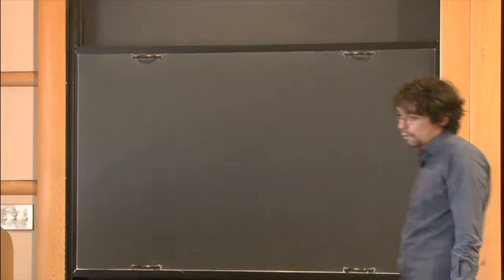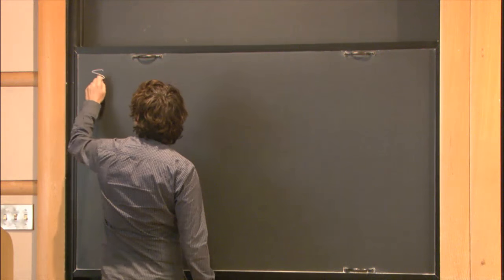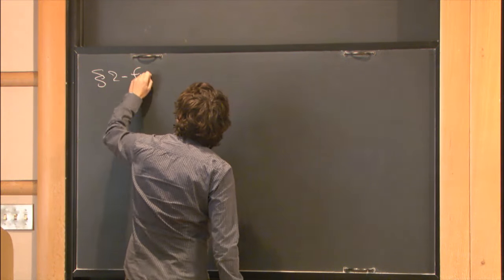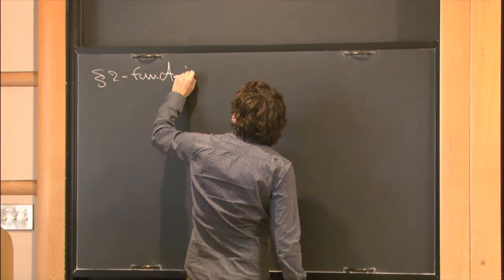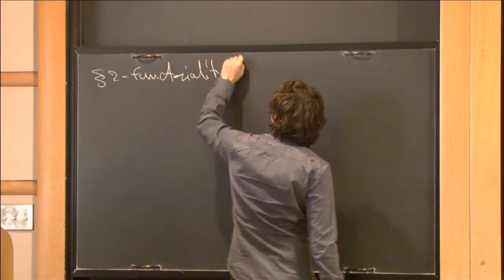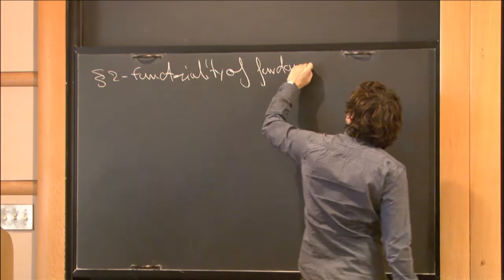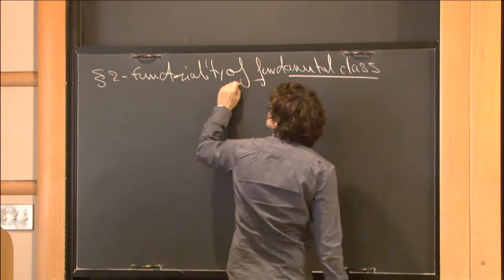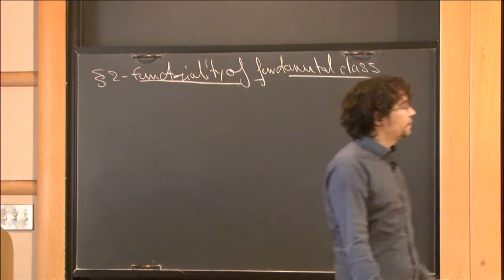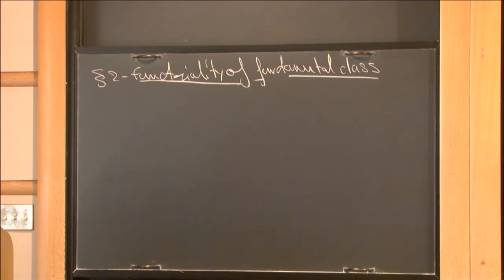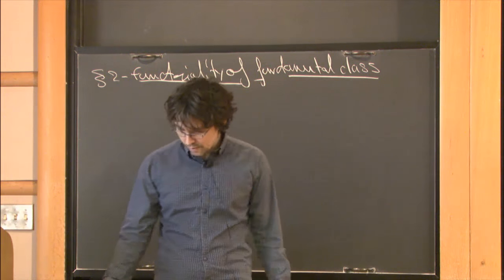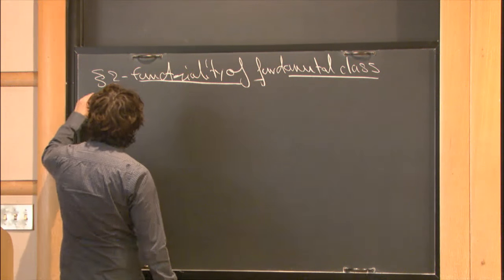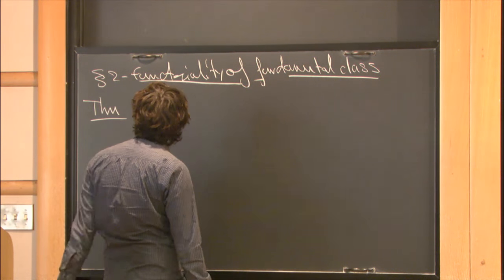I want to recall what the fundamental class in Legendrian contact homology is. For Legendrian contact homology in Euclidean space, or for displaceable Legendrian submanifolds, there are two results I think are very important and that really helped me understand what Legendrian contact homology was in this case.